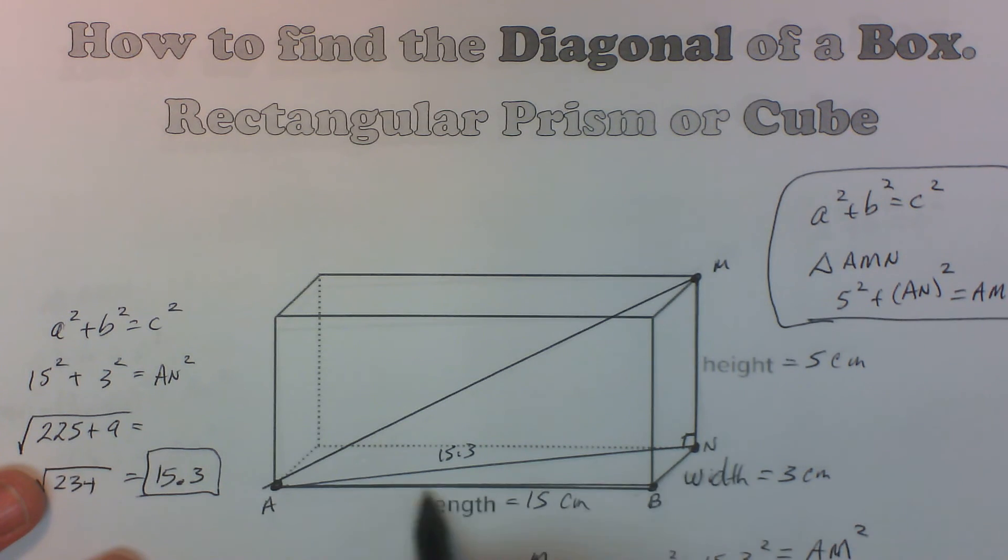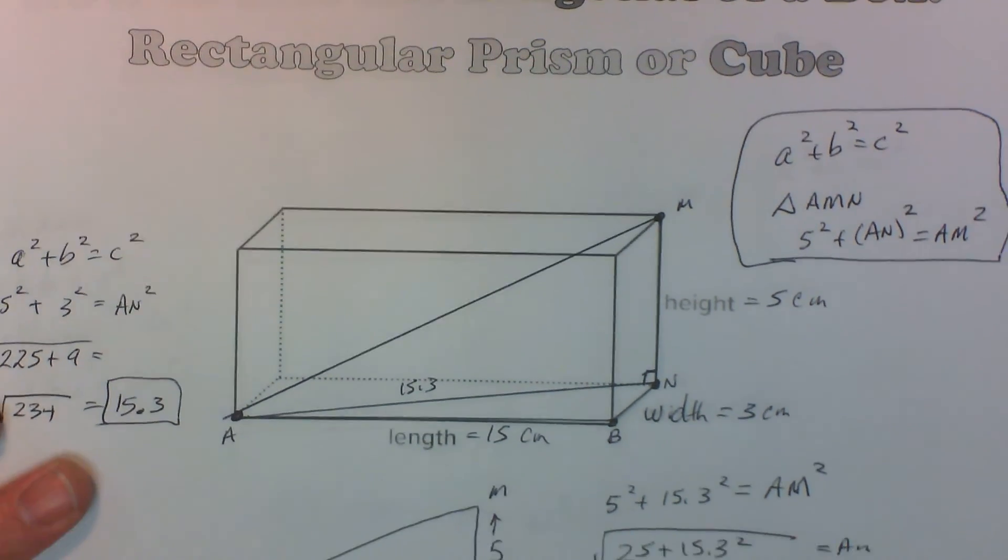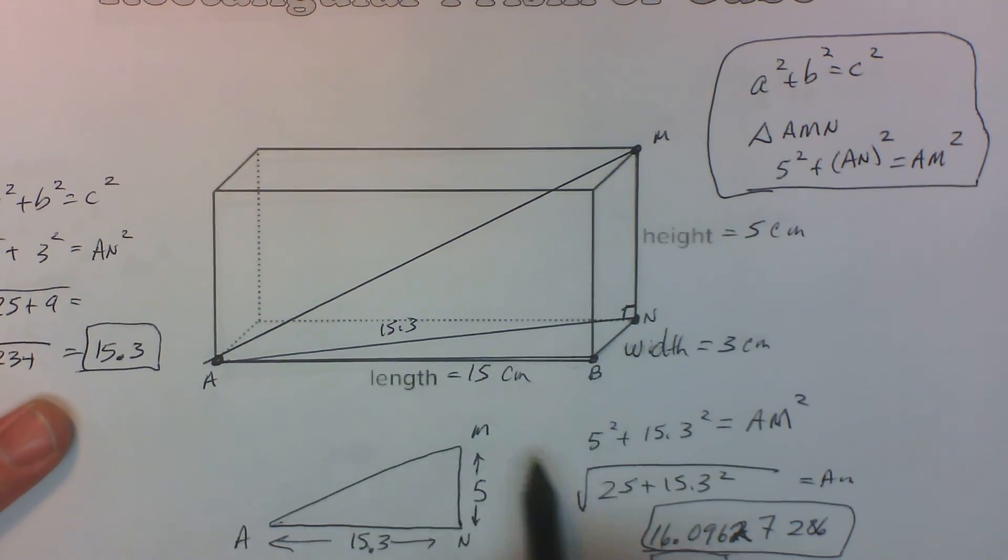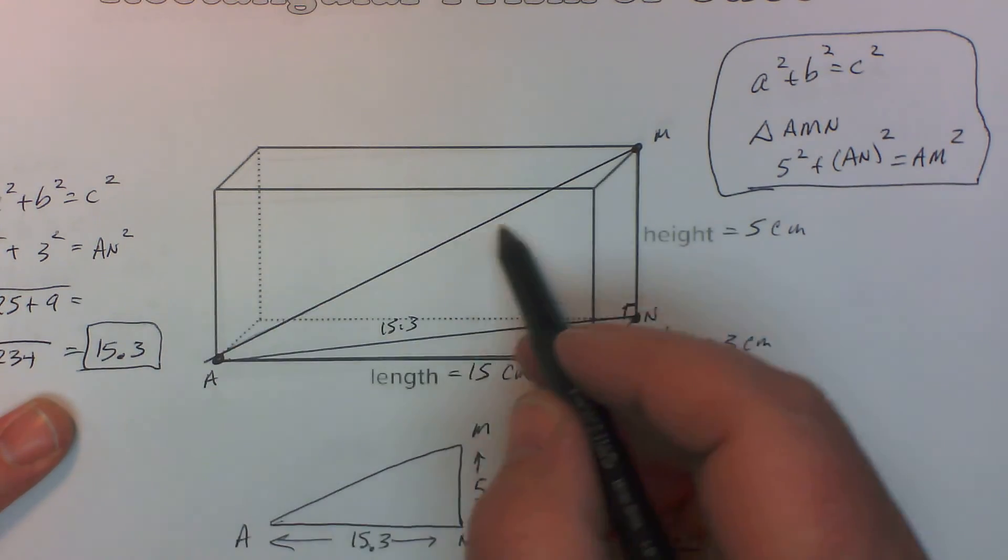Use the Pythagorean theorem to do it, and then take that value and plug it in to the other triangle and use the Pythagorean theorem again to figure out this distance.